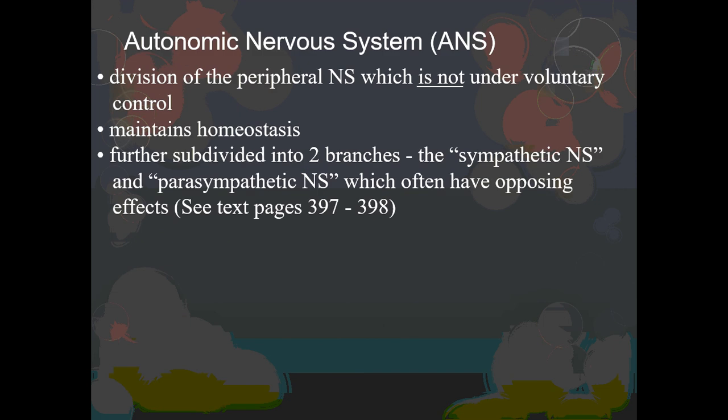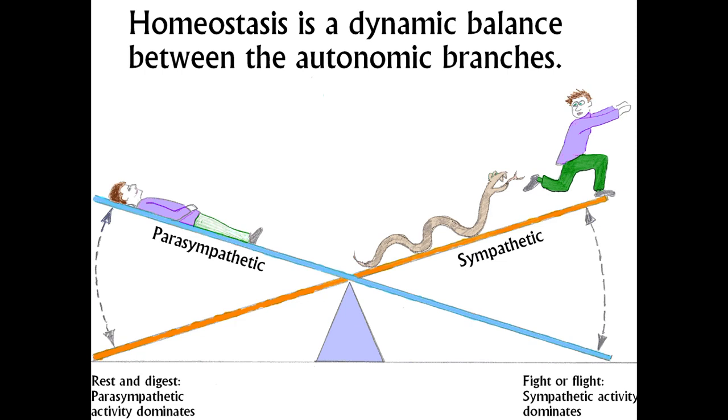A little bit more on the autonomic nervous system, because it is so important to understand. Once again, it is not under voluntary control. You may be able to have some voluntary influence over it, like your breathing rate, but ultimately your autonomic nervous system is going to take over. You don't need to be awake or conscious in order to have these autonomic effects. Their function really is to maintain homeostasis. The branches — sympathetic and parasympathetic — are opposing responses, and the point is to maintain this fine balance and maintain homeostasis.